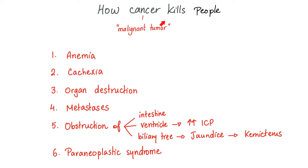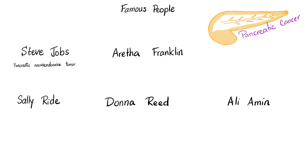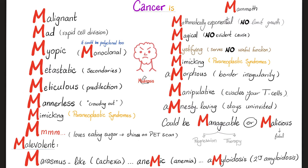How do you manage cancer? A few cancers resolve on their own — no clue why. With cancers you can watch and wait, do surgery, radiation, chemotherapy, or blood separation — apheresis — in some blood cancers called leukemias.